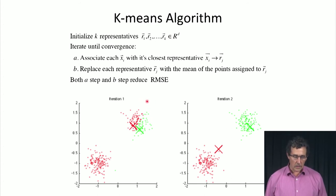The algorithm iterates between two steps. In step A, we associate each point with the closest representative to it. In step B, we replace each representative with the mean of the points assigned to it. This is repeated until convergence, and convergence always occurs.